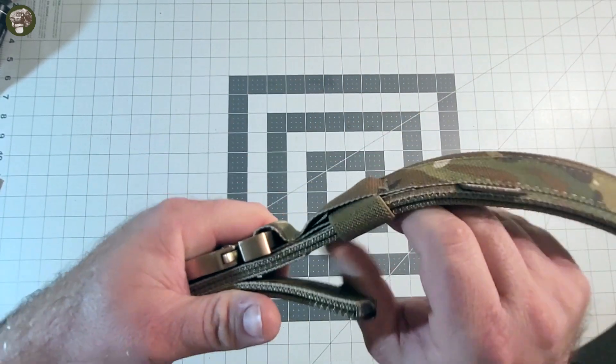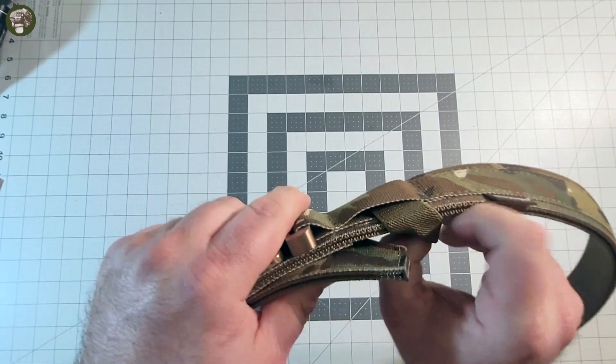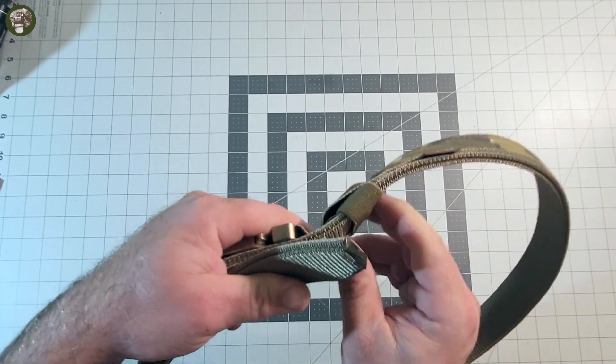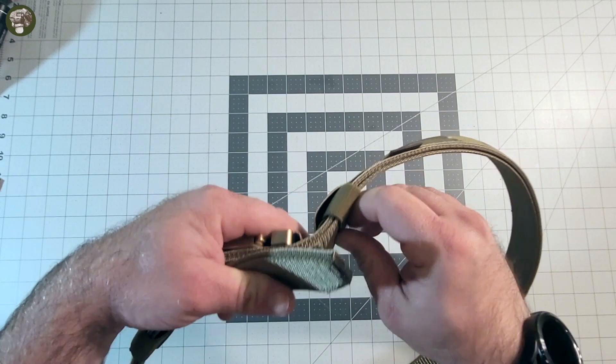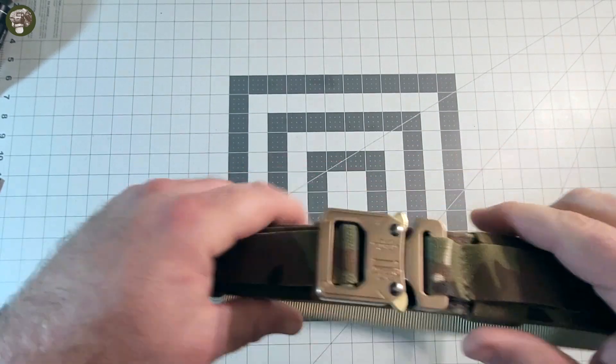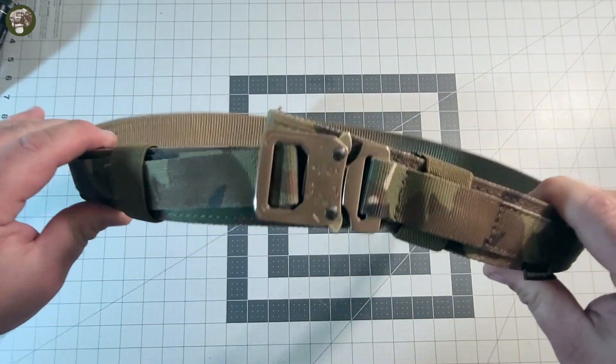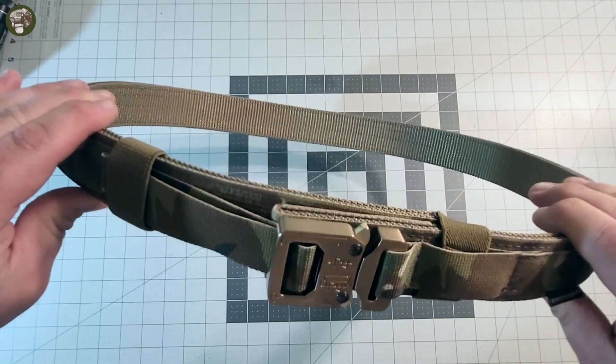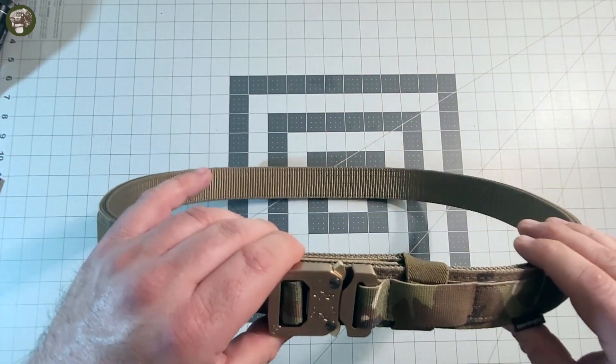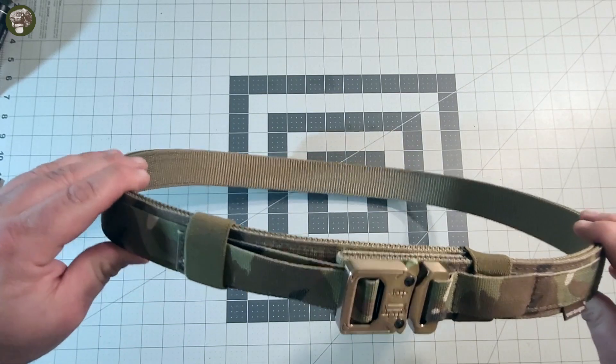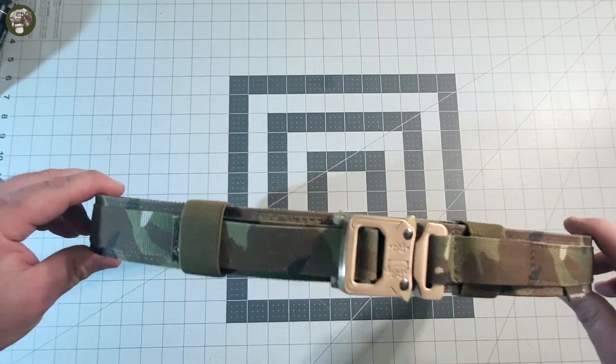So the only thing I can think is they must be expecting you to put this bitter end here back through this elastic to kind of control that. That's the only thing I can think, because once you get that in there, you still have a little bit of that motion, but it doesn't do it as bad. It's not as crazy travel when you're wearing it.